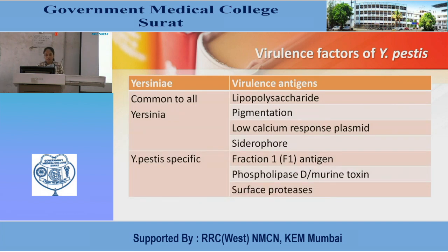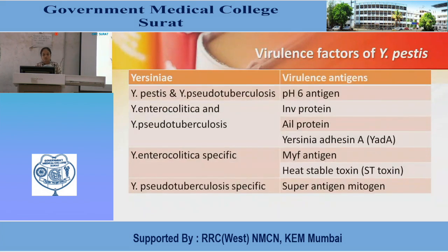Virulence factors of Yersinia pestis: common to all Yersinia are lipopolysaccharide, pigmentation, low calcium response plasmid, and siderophore. Y. pestis-specific factors are fraction 1 antigen, phospholipase D, murine toxin, and surface proteases. Yersinia pestis and Y. pseudotuberculosis share pH 6 antigens. Y. enterocolitica and Y. pestis share invasin (INV) protein, AIL protein, and Yersinia adhesin A (YadA). Y. enterocolitica-specific factors are MYF antigen and heat-stable toxins. Y. pestis-specific factor is superantigen mitogens.